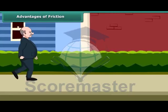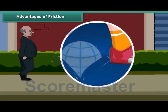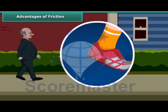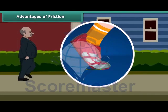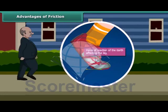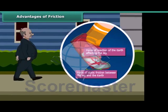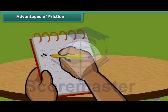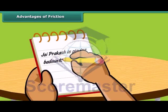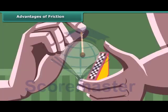Friction is both good and bad. We are able to walk because friction prevents us from slipping — when we push the ground with our foot, friction provides a forward reaction and pushes us forward. We are able to write because there is friction between the tip of the pencil and the paper. Lighting a matchstick is another useful application of friction.